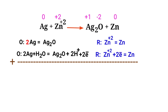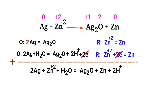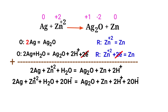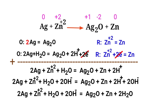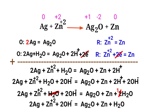Cancel the same terms. For a reaction in a basic medium, add one OH⁻ for every H⁺ present in the equation. The OH⁻ must be added to both sides to keep charge and atoms balanced. Combine OH⁻ and H⁺ that are present on the same side to form water. Cancel the same terms again. The equation is now balanced in a basic medium.